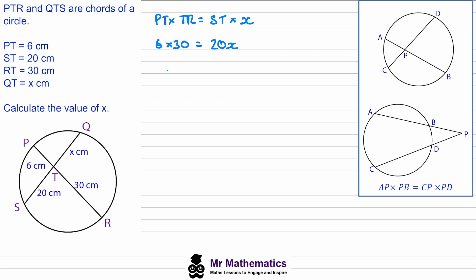6 times 30 is 180. That will equal 20x. We'll divide both sides by 20. These will cancel so x will equal 9 cm.